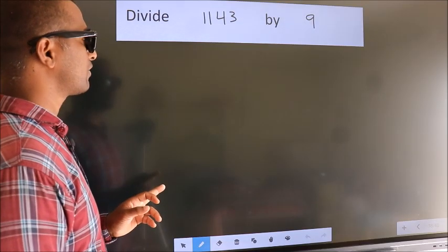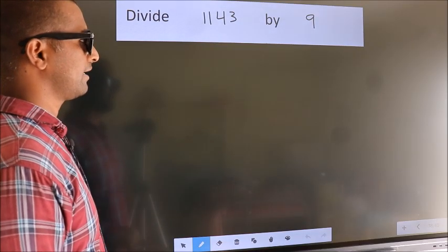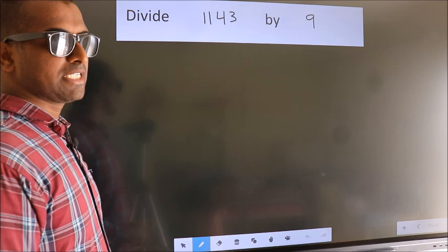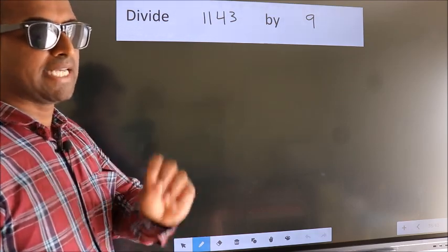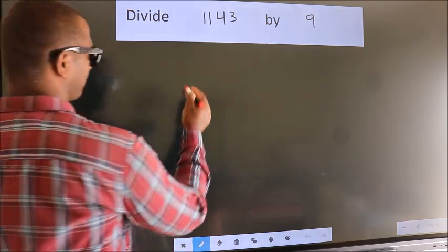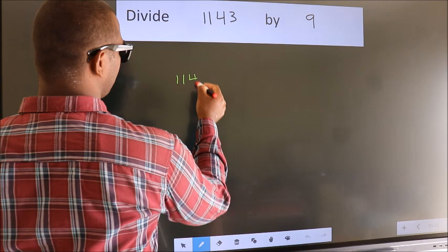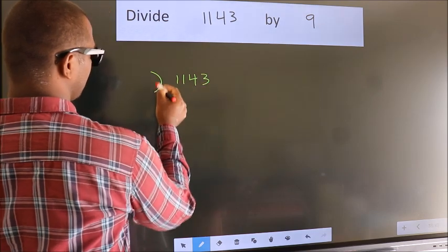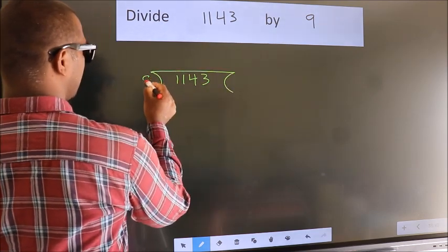Divide 1143 by 9. To do this division, we should frame it in this way: 1143 here, 9 here.